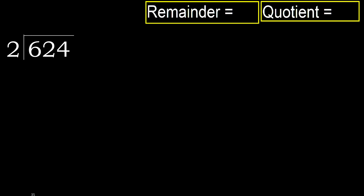624 divided by 2. Starting with 6: 6 is not less, so with 6, 2 multiplied by which number is nearest to 6 but not greater? 2 multiplied by 4 is 8 — 8 is greater. Multiply by 3: 6 is not greater.